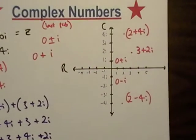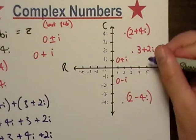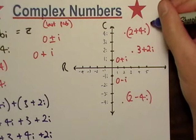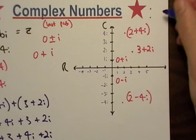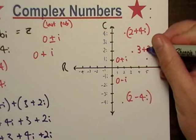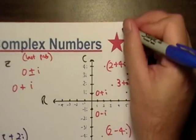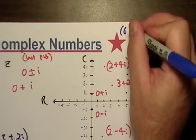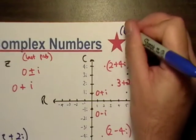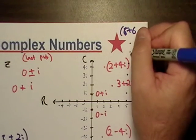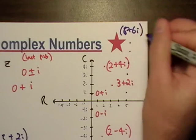So if I came over here and I wanted to graph it, I would go 5. It doesn't look like I have enough room, but it's probably going to be up here. Here's 1, 2, 3, 4, 5.